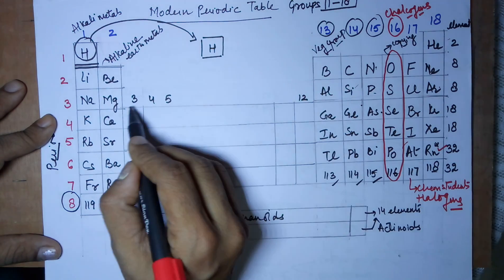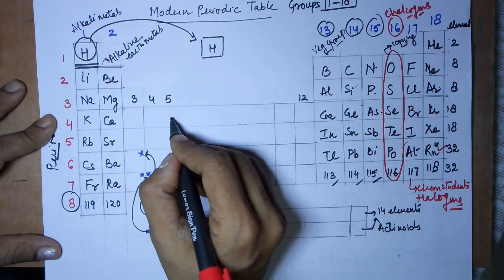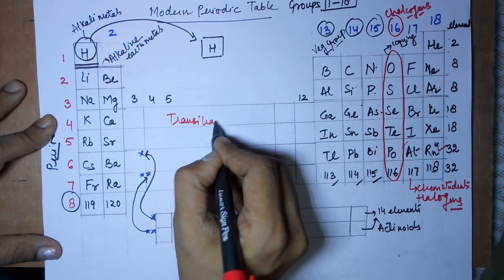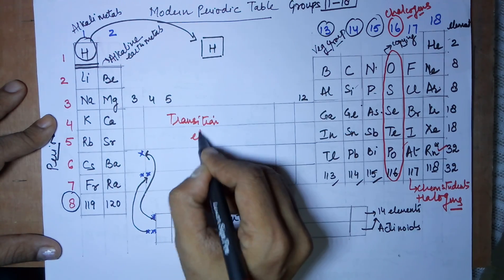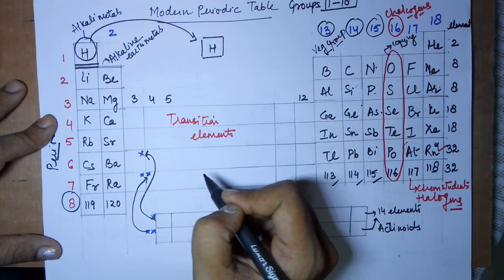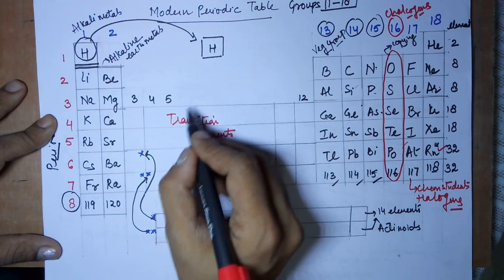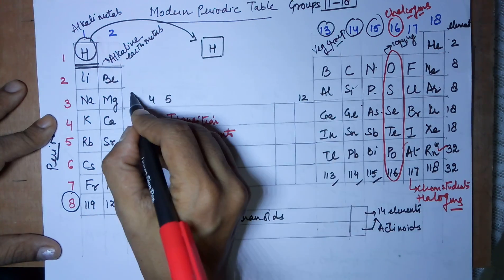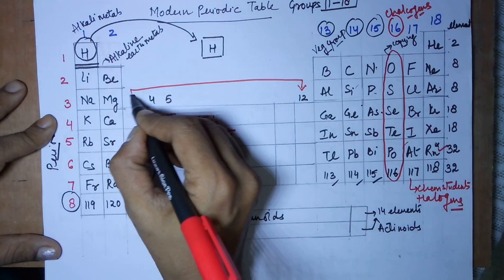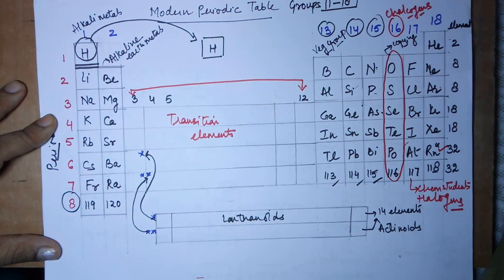Group number 3 to 12 is also called the transition elements. With this I close my class — thank you.